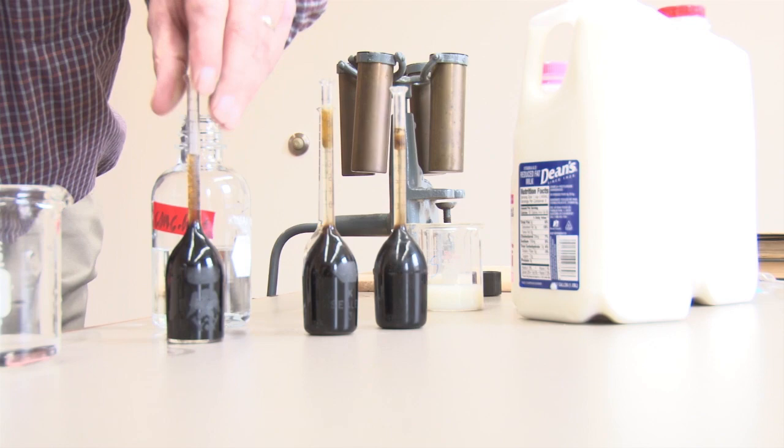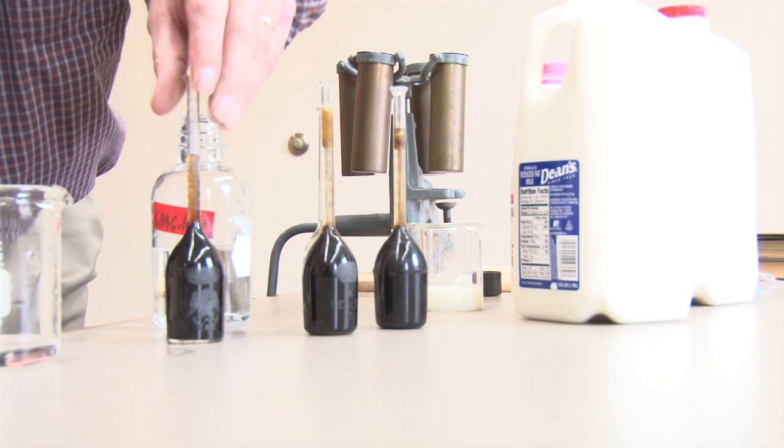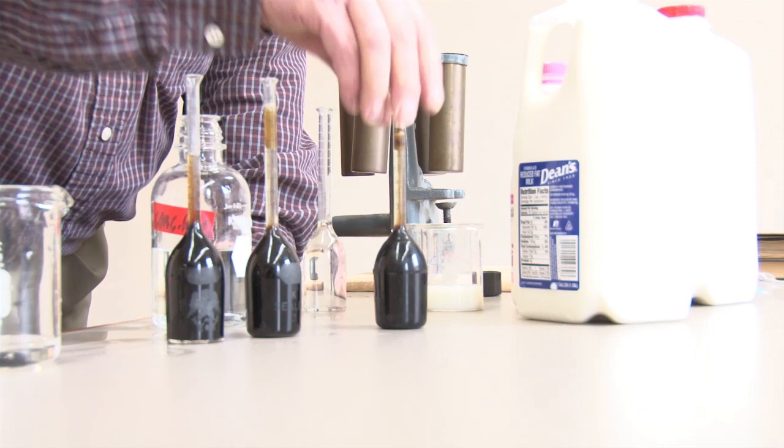So if we read off the gradations, the whole milk is 4.8%. The 2% is 2%. The skim milk isn't actually zero—the skim milk looks to be about 0.5%.